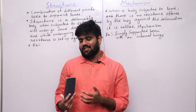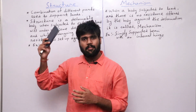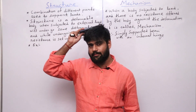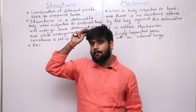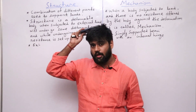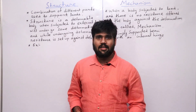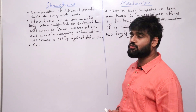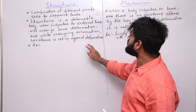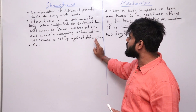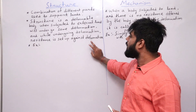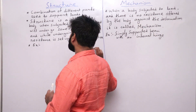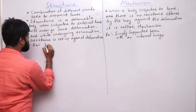What's a mechanism? If this 50 kilonewton load is applied and I can't transfer it to the ground safely, and I deform up to the application of this load, you can call me a mechanism. So a structure is a combination of different parts used to support loads. It is a deformable body — when subjected to external load it will undergo some deformation, and while undergoing deformation, resistance is set up against that deformation. Let's take an example of a simply supported beam.